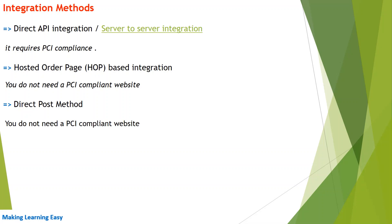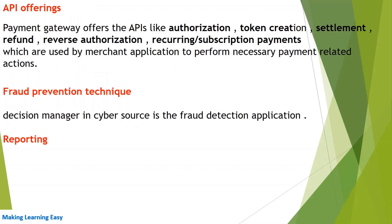The third method is direct post. This kind of method also does not require a PCI compliant website. In this method, the merchant application submits payment details to a particular endpoint — all payment details are populated in an HTML form and submitted to the payment gateway's endpoint. Importantly, merchants do not save sensitive information like credit card numbers or CVV at their end.